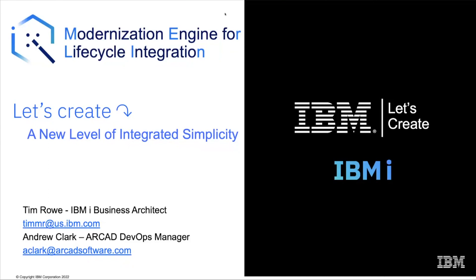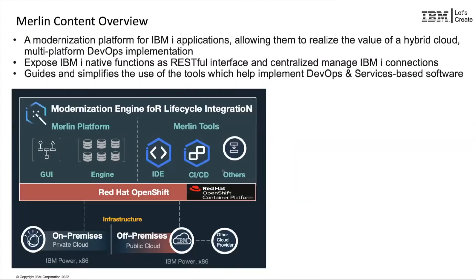So let's dive into this Merlin thing for just a little bit and figure out what we're talking about. Merlin is a new platform that we've created to help our IBM i application businesses deal with the hybrid cloud world. We have created some new tools, all running on Red Hat OpenShift containers, that are really focused on helping our developers with modern development practices. We've got plans for many other tools into the future.